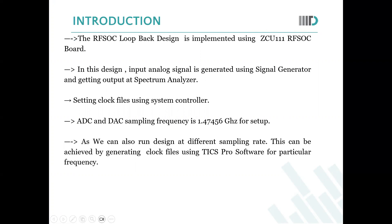In this design, we are giving the input analog signals and taking the analog signal as the output. We are giving the input analog signal using the signal generator and getting the output at the spectrum analyzer. For that, we need to set up the clock files using the System Control UI. We are setting the sampling rate of ADC and DAC at 1.47456 GHz.